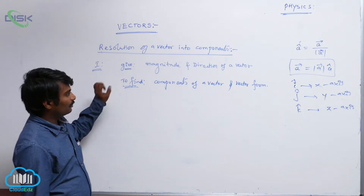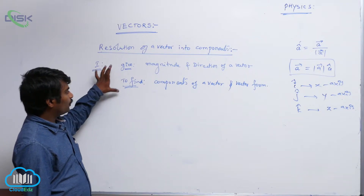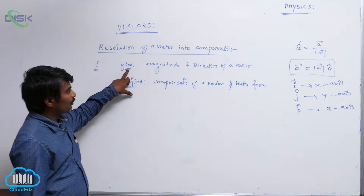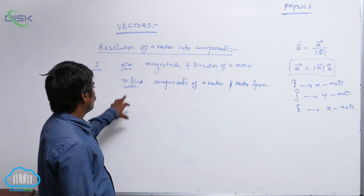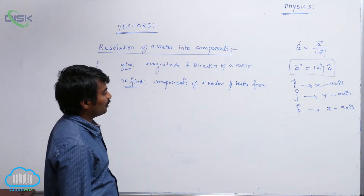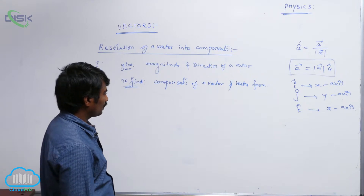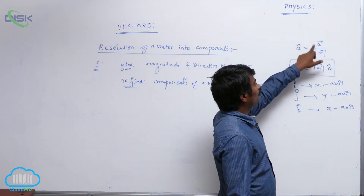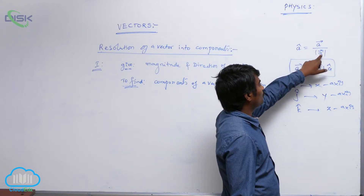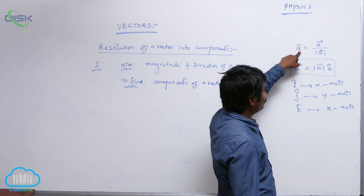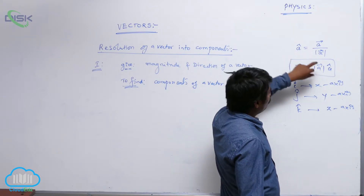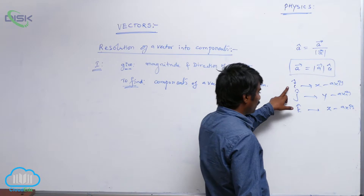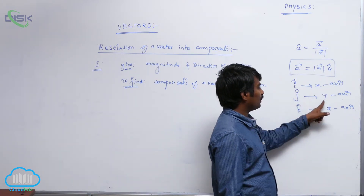Another method to add two vectors and calculate the resultant vector and direction is the analytical method, or resolution of a vector into components. This has two parts depending on the question. The first part: the question gives the magnitude and direction of a vector, and we have to find the components and vector form. To start this part, if you know a vector, dividing it by its magnitude gives the unit vector, whose magnitude equals 1.